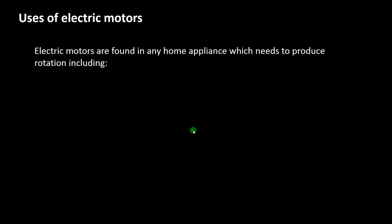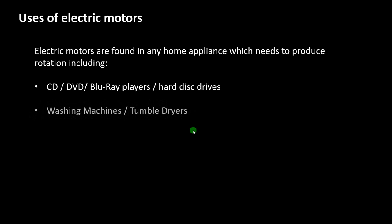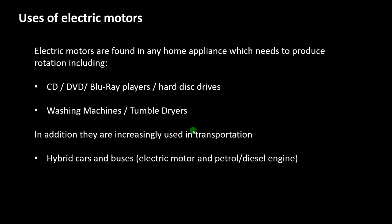The final thing we need to know is what electric motors are used for. There are small electric motors in domestic appliances such as CD, DVD, and Blu-ray players and hard disk drives — anything that needs to rotate. Slightly larger electric motors are found in things that spin substantial mass, like a washing machine or tumble dryer. Motors are also used in vehicles — increasingly in hybrids, so hybrid cars and buses have a normal petrol or diesel engine plus an electric motor, enabling clever things to increase fuel economy. There are also pure electric vehicles like milk floats and golf carts. It's useful to know some examples.